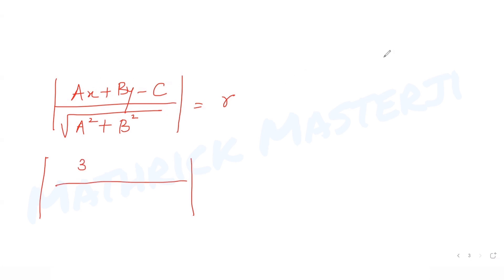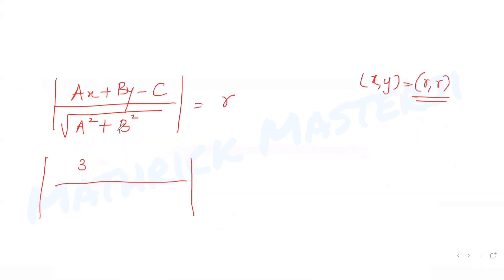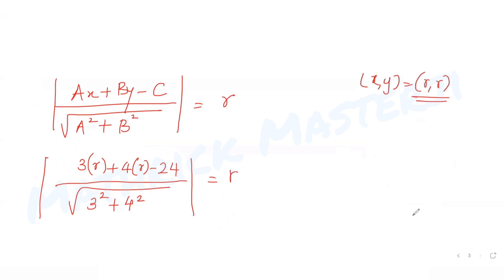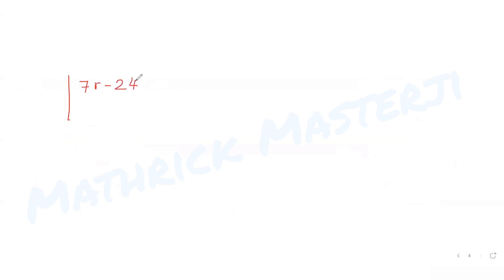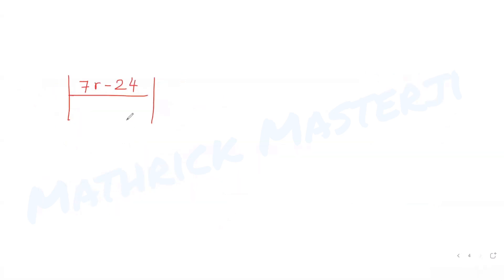Substituting the incenter coordinates (r, r) into the distance formula with the line 3x + 4y - 24 = 0: we get |3r + 4r - 24| / √(3² + 4²) = r. That simplifies to |7r - 24| / √25 = r, and since √25 = 5, we get |7r - 24| / 5 = r.